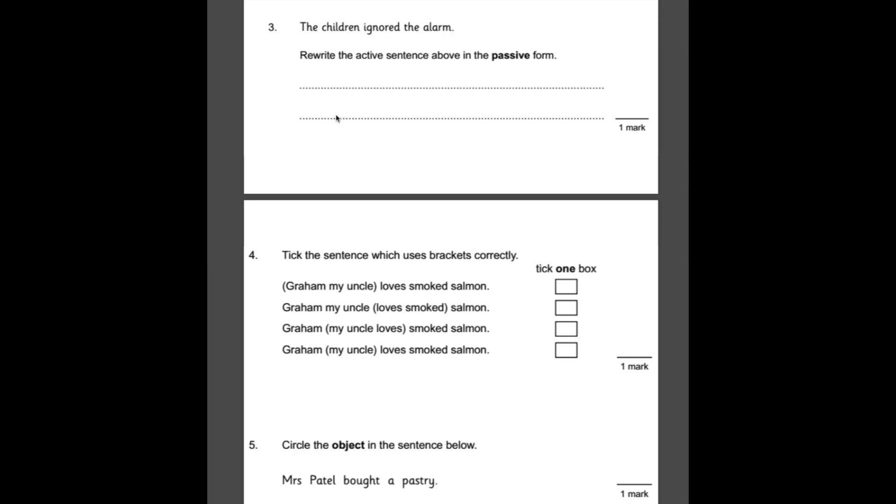Number three, the children ignored the alarm. Rewrite the active sentence in the passive form. What you need to know about an active sentence is it tends to be the subject is doing something to the object. So in this case, the children are the subject. That's who the sentence is about. And they're doing something, they're ignoring the alarm. And the alarm is the object in the sentence. In a passive sentence, we would flip that around. We would have the object is having something done to it by the subject. So the answer to this one would be the alarm was ignored by the children.